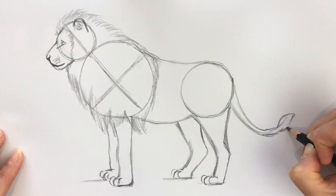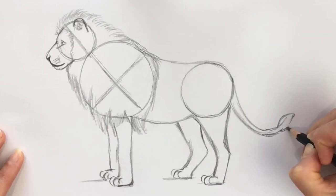Now I'm going to use pen over the top, and then I'm going to rub out all the pencil lines, and you'll see the finished piece.